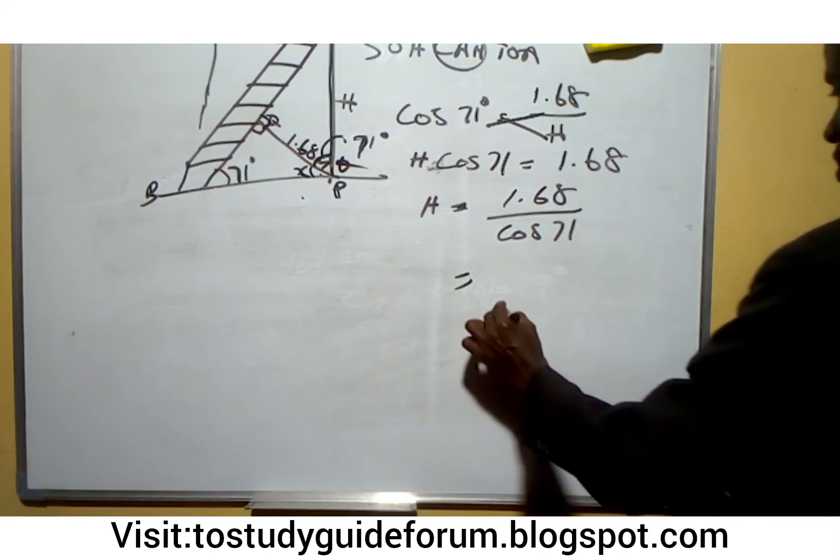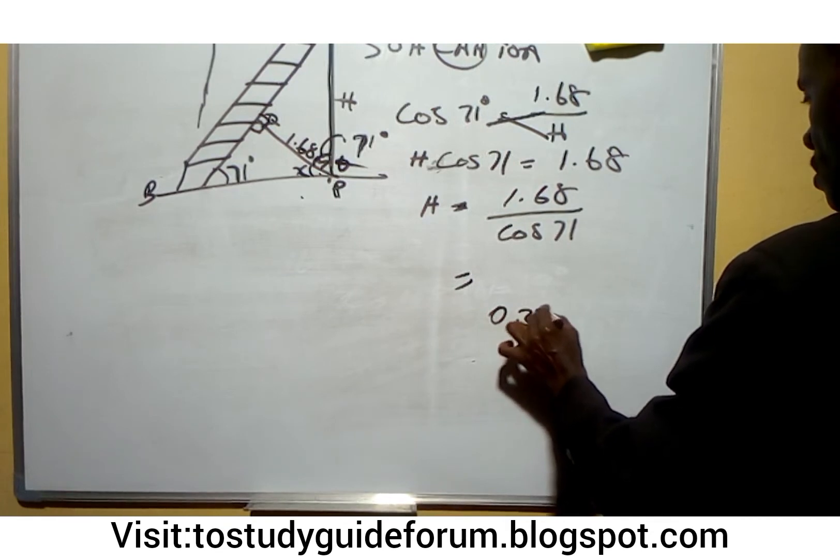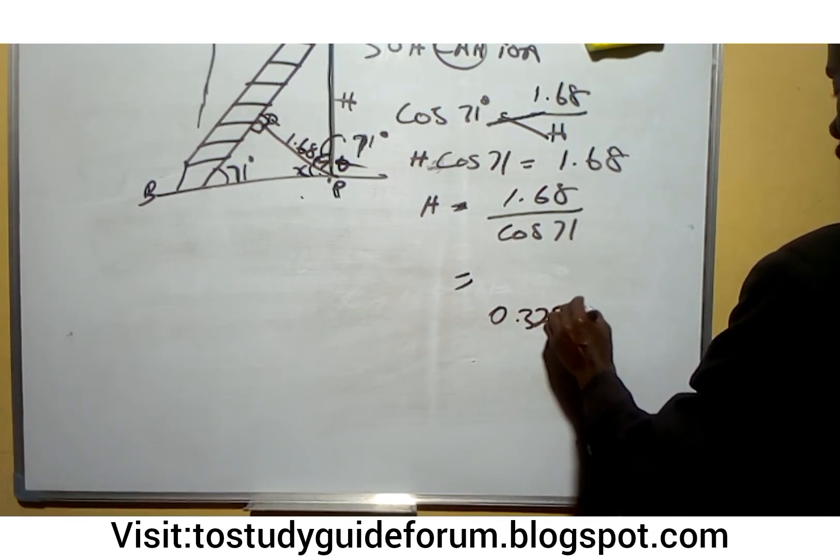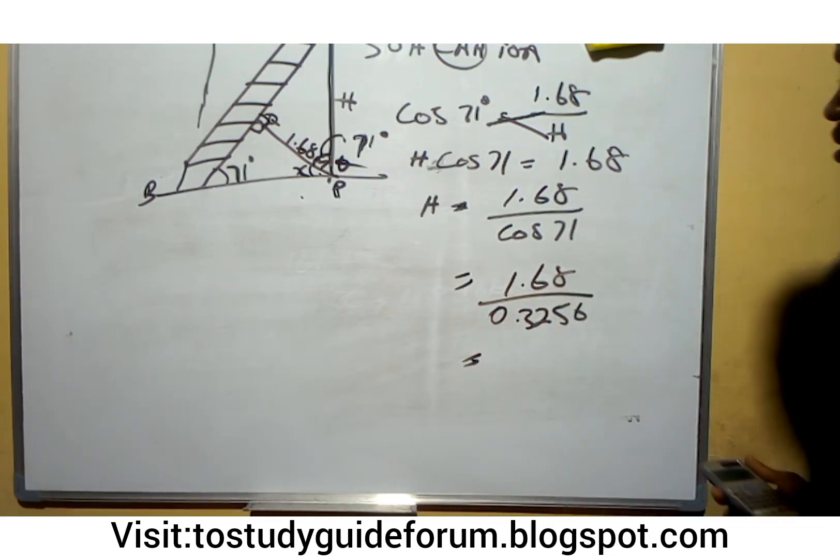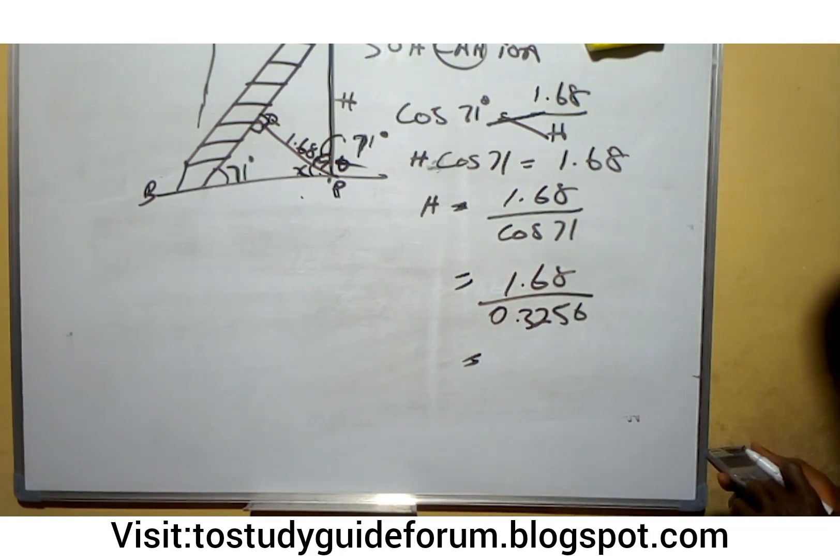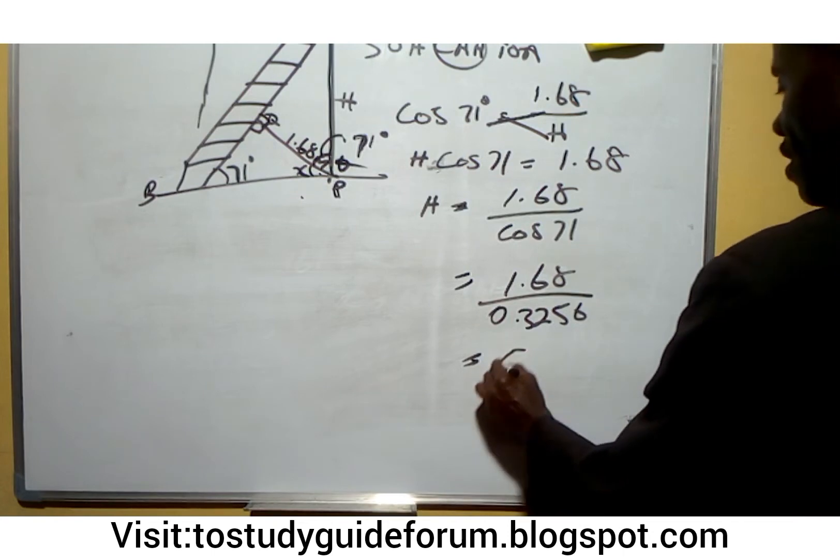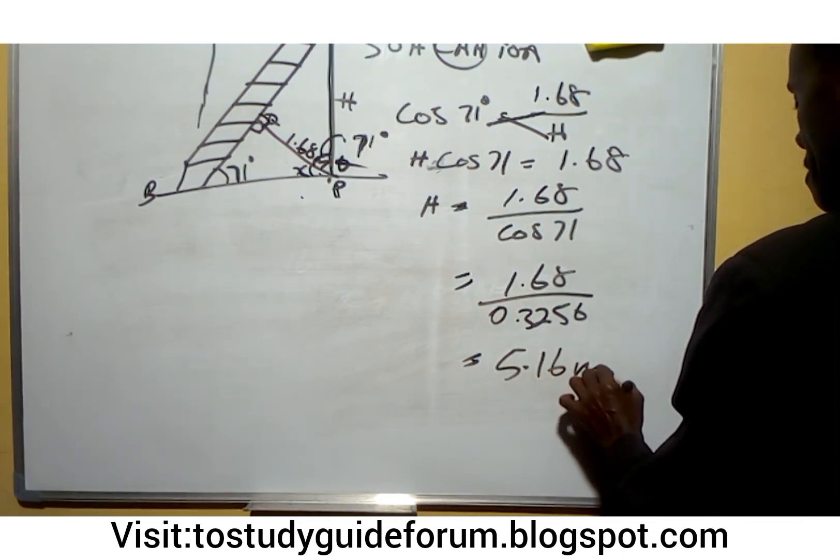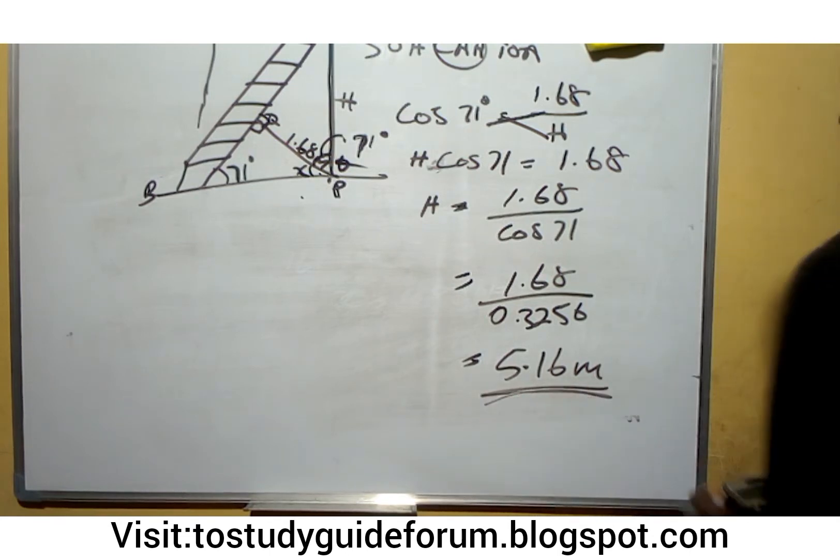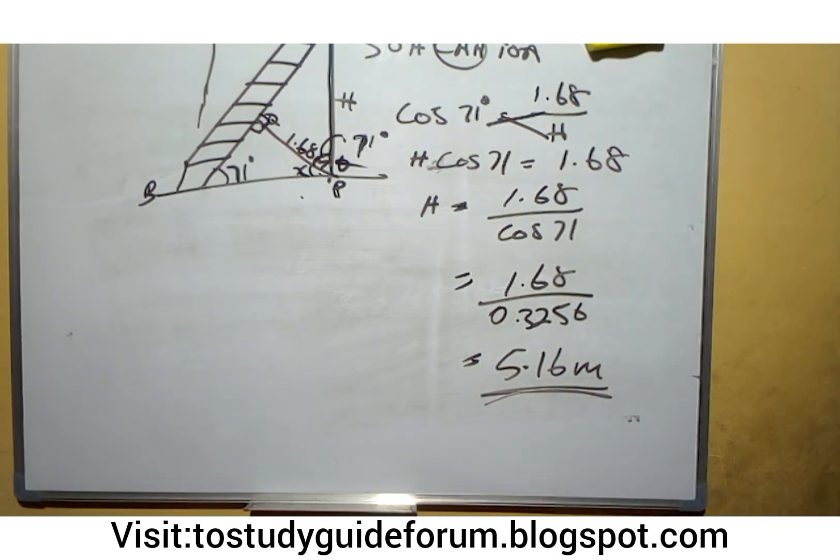We can use our device to get cosine 71, which is 0.3256. So we have 1.68 divided by 0.3256 which gives us 5.16 meters. So that's the length.